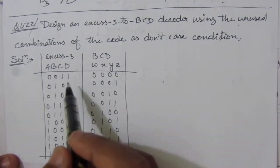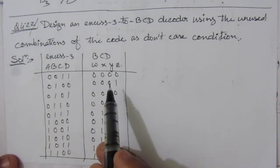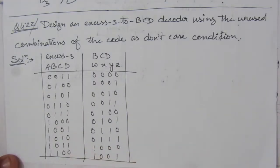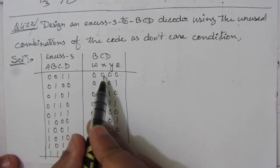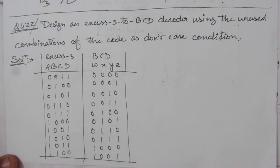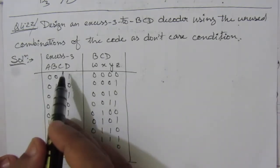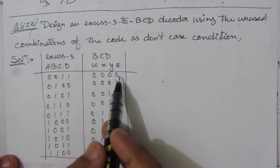I have made the table for the XS3 to BCD converter. The BCD number ranges from 0 to 9 — we represent decimal numbers 0 to 9 in binary representation, which is the binary coded decimal number. To find the XS3 number, we add 3 to the BCD number. So 0 + 3 = 3, and 1 + 3 = 4, and so on.